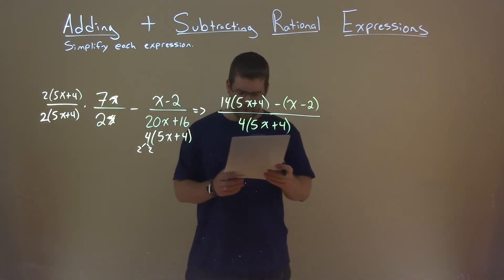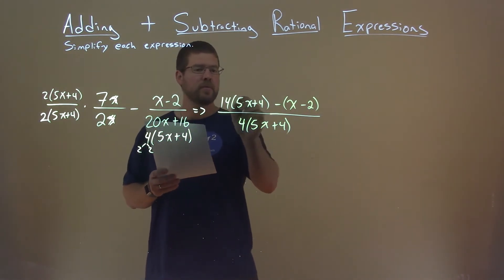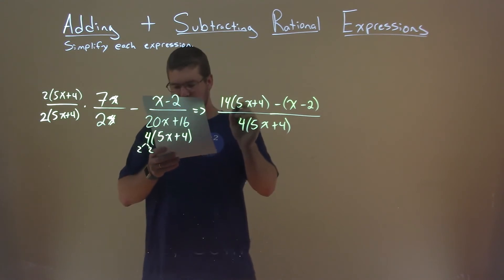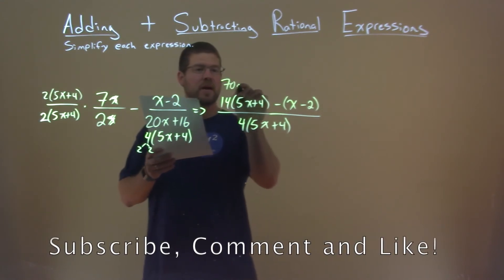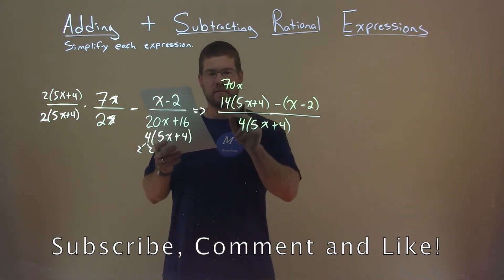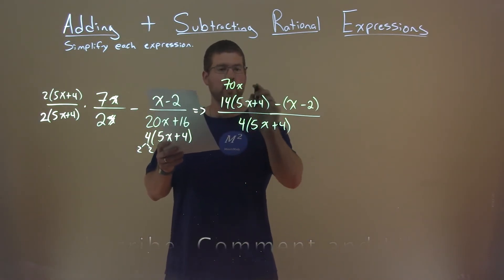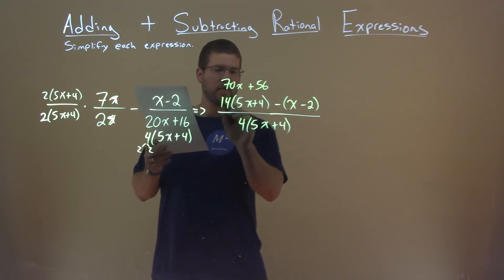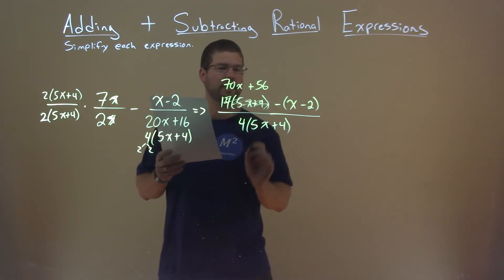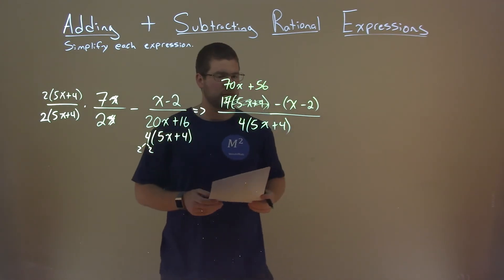Alright. So now, what happens if we simplify this a little? Well, let's distribute - 14 times 5 is 70x, and 14 times 4 is 56. So I'm going to replace that here, multiplying out like that. So we have 70x plus 56, minus x minus 2.